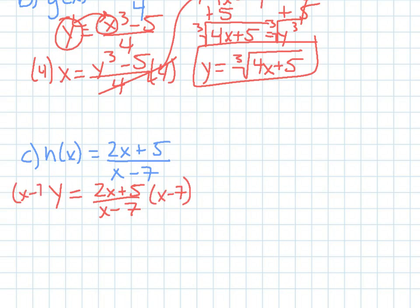So I multiply both sides by x minus 7. And I'm going to multiply this through. So I get xy minus 7y equals 2x plus 5.